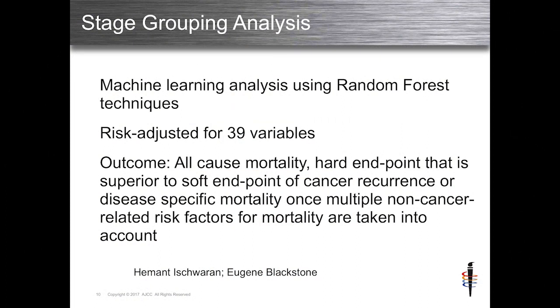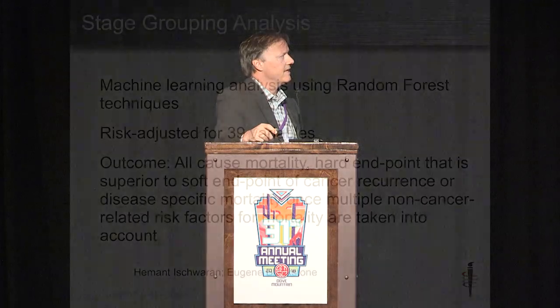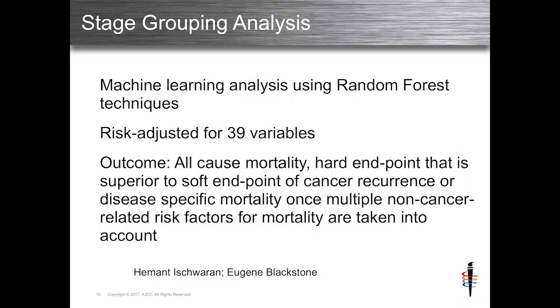That data was put into a machine — this was not me that did this. Hemant Ishwaran and Eugene Blackstone were the drivers behind the statistics for this stage grouping. They risk-adjusted 39 variables included in the database, plotted each individually as to how that variable would affect overall staging, and using a random forest analysis technique were able to figure out which variables were important in terms of individual stage groupings.